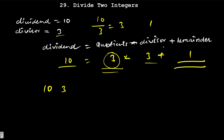What we can do is keep subtracting the divisor (3) from the dividend (10) until we get a number less than the divisor. Subtract 3 from 10 → 7, subtract 3 → 4, subtract 3 → 1. Now 1 is less than the divisor, so we stop. The total number of steps taken — 1, 2, 3 — gives us our result of 3.